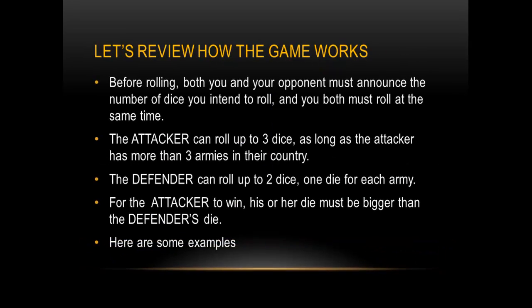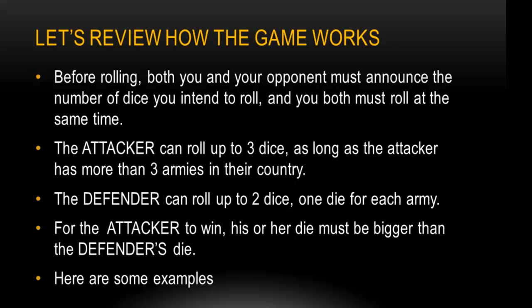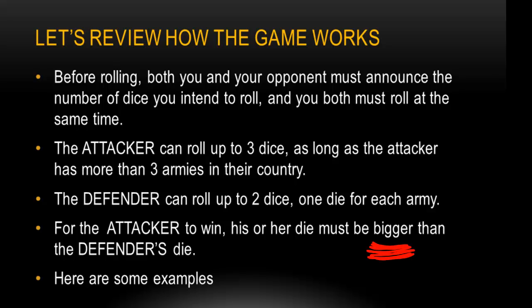Let's review how the game works. Before rolling, both you and your opponent must announce the number of dice you intend to roll, and you both must roll at the same time. The attacker can roll up to three dice as long as they have more than three armies in their territory. The defender can roll up to two dice — one die for each army, so one army means one die, two armies means two dice. For the attacker to win, their die must be bigger than the defender's die, so the highest attacker die must beat the highest defender die.